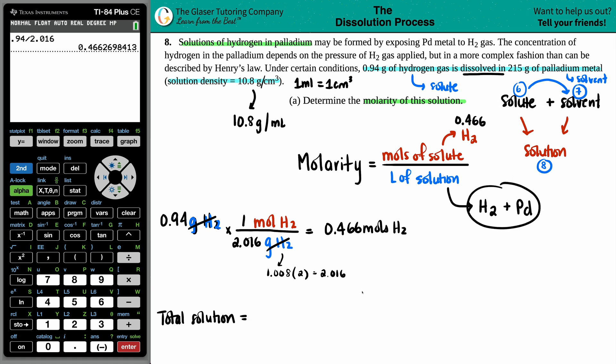The total solution would be the solute plus the solvent, the addition of H2 plus Pd. We said that 0.94 grams of the H2 was the solute, and it's added into the 215 grams of the Pd. So 215 plus 0.94, the total solution is 215.94 grams.